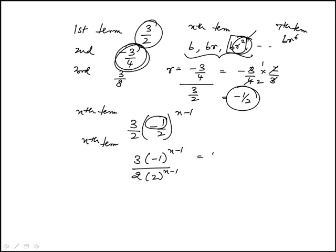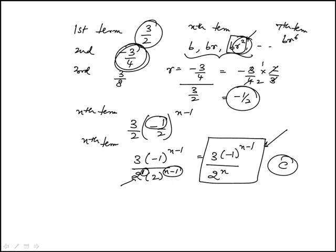The reason for that is because I already have another 2 here. So this is 2 to the 1, I can add the exponents, and this becomes 2 to the n, because this is n minus 1 plus 1, which would be n. So we're left with this, and I think this is as far as we need to go. But look at the answer choices. This is seen as answer choice C.